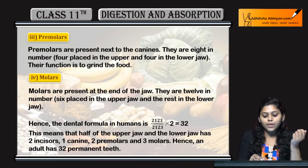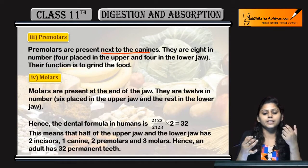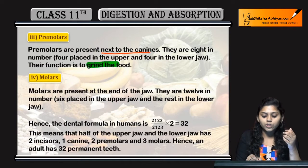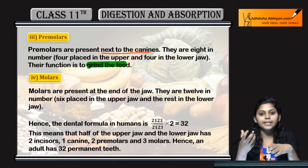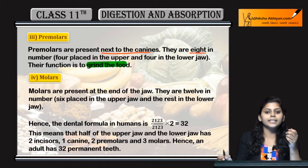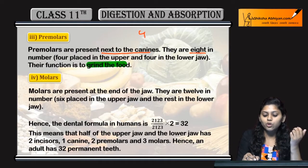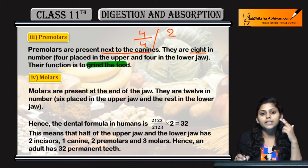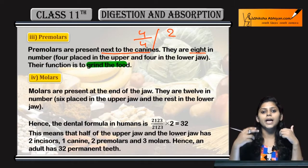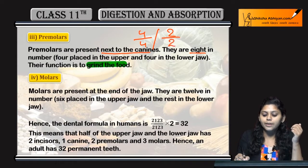Next, premolars. Premolars are next to canines — the teeth adjacent to the canines are premolars. Their function is to grind the food. These are eight in number: four in the upper jaw and four in the lower jaw, meaning two on the left side of the upper jaw, two on the right side of the upper jaw, and similarly for the lower jaw. So in the dental formula, premolars are two by two.